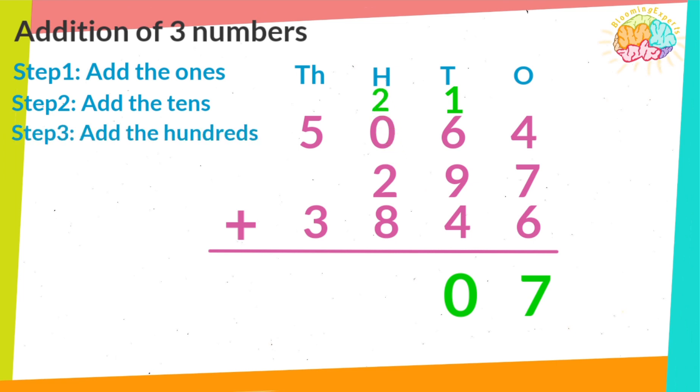Step 3. Add the hundreds. 1, 2, 3, 4, 5, 6, 7, 8, 9, 10, 11, 12. Keep the ones and move the tens to the next digit.